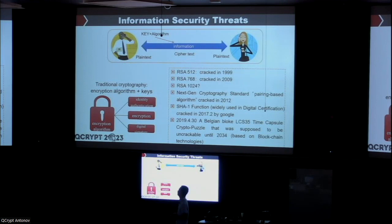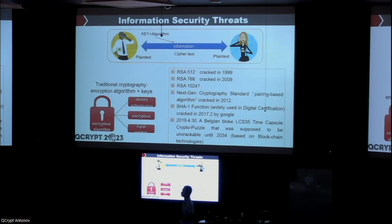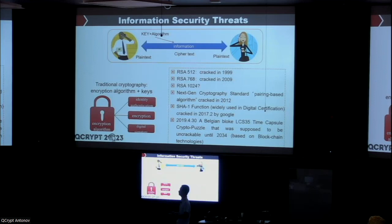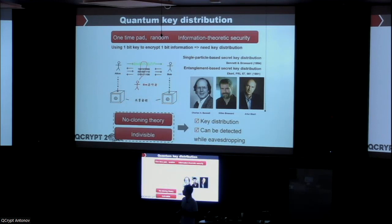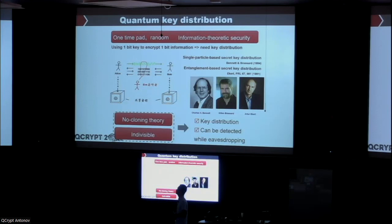We talk about information security. Traditional cryptography has been very good, but as mathematics develops and computing power increases — especially quantum computing — we have a lot of challenges. So we are going to find new solutions: PQC and also QKD. Thanks to Bennett and Brassard for the first protocol, BB84, we have ways to distribute information-theoretically secure keys. Together with one-time pad or AES encryption, we can secure communications.